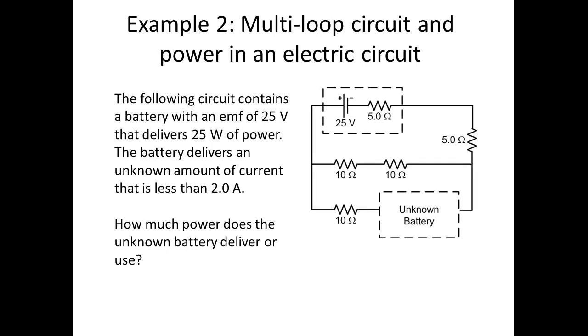Here's a second example of multi-loop circuits and an example that also involves calculating power in an electric circuit. We have a circuit diagram that contains a battery with an EMF of 25 volts that delivers 25 watts of power. The battery delivers an unknown amount of current that is less than 2 amperes. How much power does the unknown battery deliver or use?